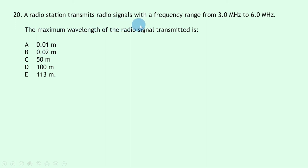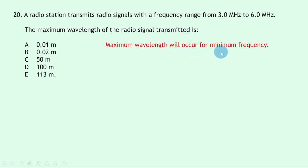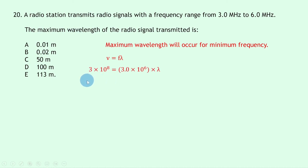Question 20: a radio station transmits frequencies from 3.0 MHz to 6.0 MHz. Maximum wavelength corresponds to minimum frequency due to the inverse relationship. Using v = fλ with v = 3 × 10⁸ m/s and f = 3.0 × 10⁶ Hz: λ = 3 × 10⁸ ÷ 3.0 × 10⁶ = 100 metres. The answer is D.